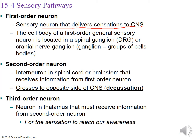The second order neuron is the interneuron — the in-between part — in either the spinal cord or the brain stem that receives information from the first order neuron. It is very important to note that the second order neuron is the one that does the crossing over to the opposite side of the central nervous system. Crossing over is called decussation — make sure you are very familiar with that term.